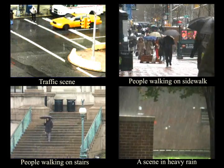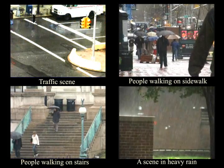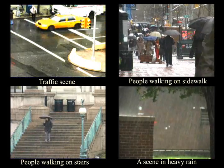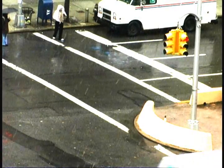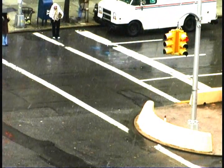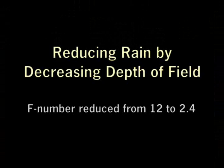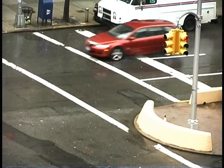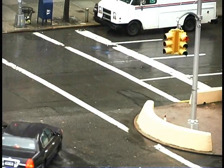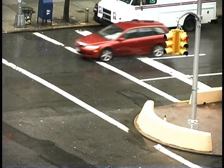We now show these videos in full resolution along with videos taken with camera settings to reduce the effects of rain. Here is a traffic scene in rain taken with default camera parameters. The scene is distant and has fast-moving objects. Note that the visual effects of rain are strong. Our analysis shows that in such types of scenes, the effects of rain can be reduced by decreasing the F number from 12 to 2.4. Here we see that the effects of rain are greatly diminished while scene appearance is maintained.